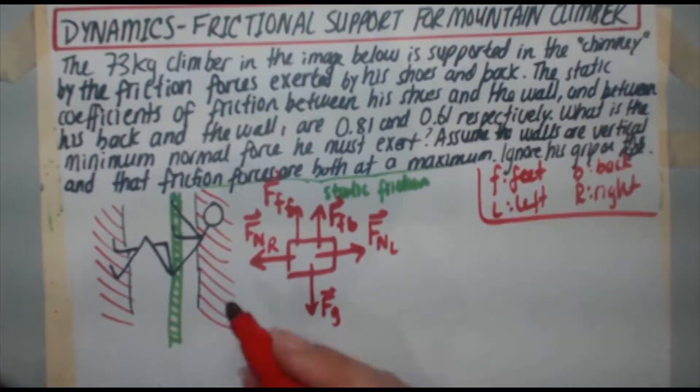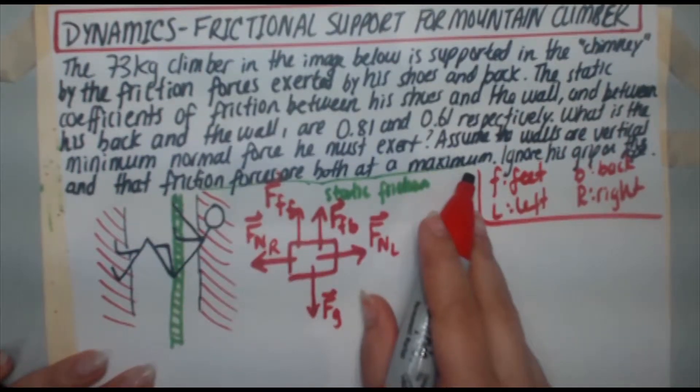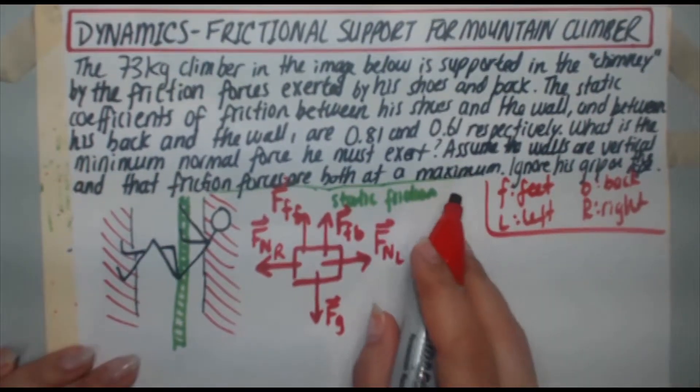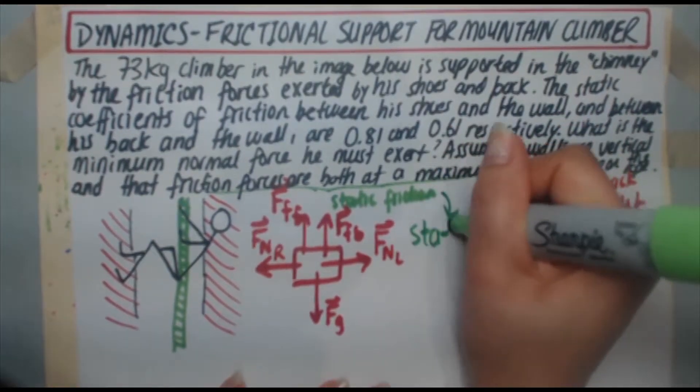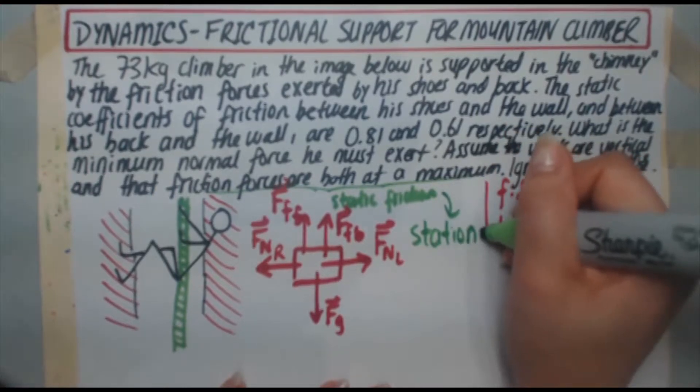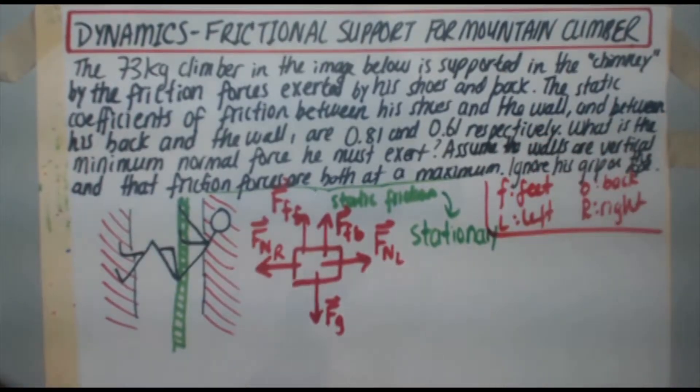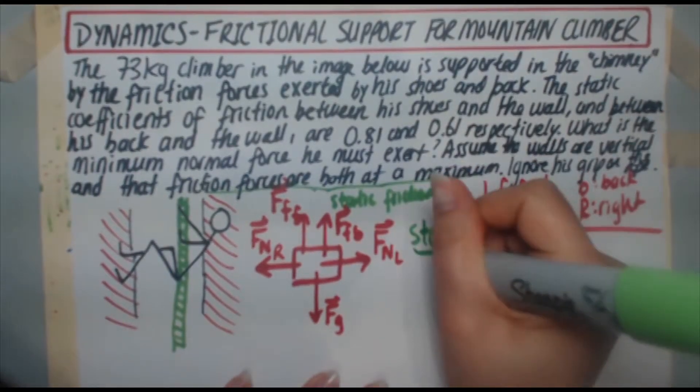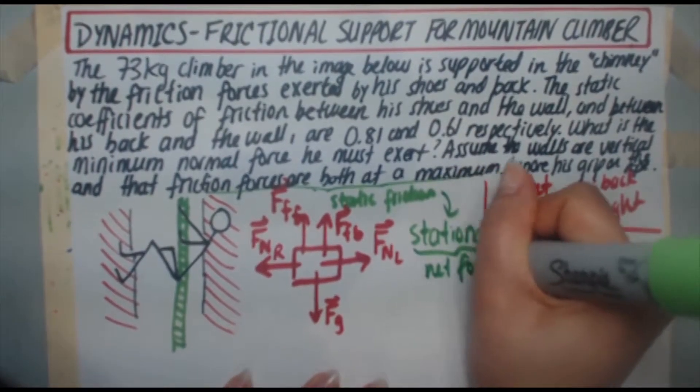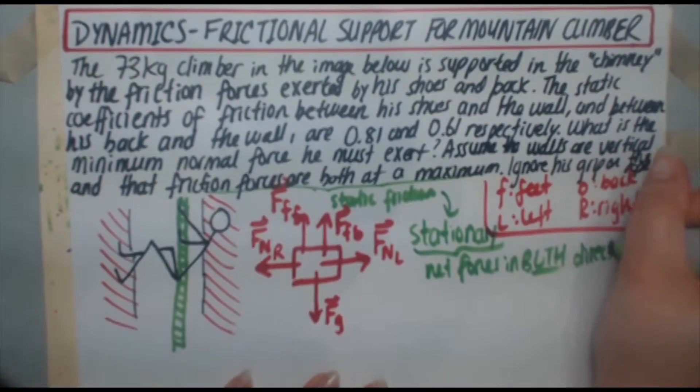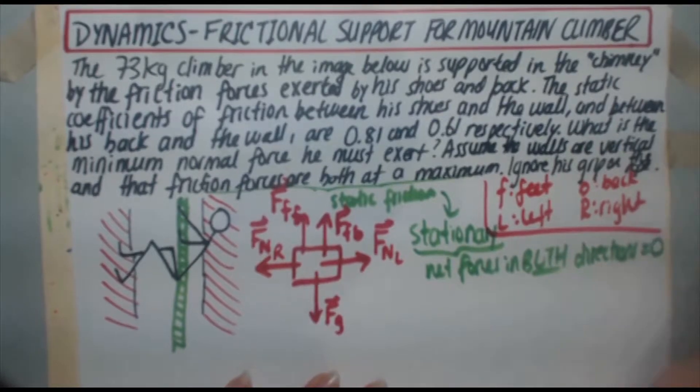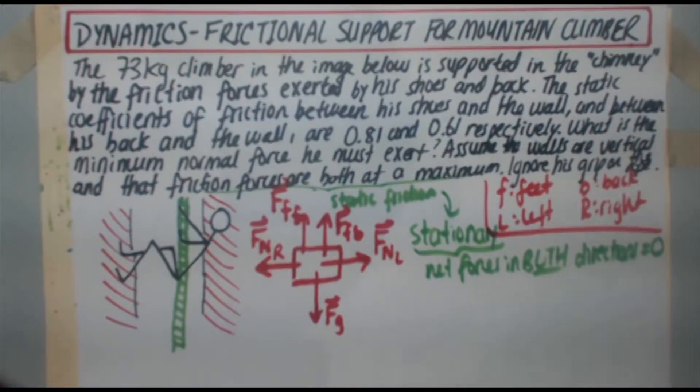Now, because we're dealing with frictional forces at a maximum, we're dealing with static friction. And static friction means you're not moving. You're stationary. When you're moving, that's now kinetic friction. So this means you are stationary, you're not moving. And being stationary means the net forces in both directions equals zero. And that's very important. And that's what actually simplifies this problem a great deal.